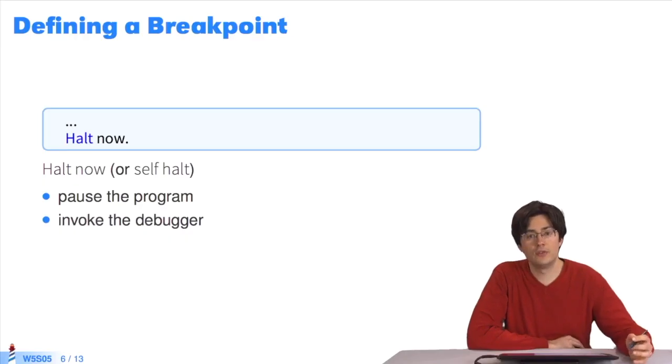The other way of doing this is using breakpoints. A breakpoint is a place in the code where we indicate to Pharo that it has to stop next time it passes this place.